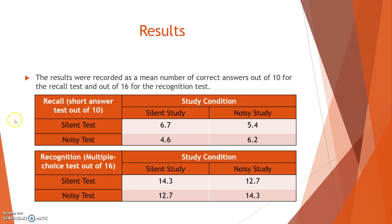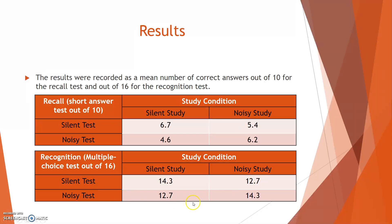For the recognition test, the silent study/silent test scored 14.3, and this was exactly the same for noisy study/noisy test at 14.3. Similarly, silent study/noisy test scored 12.7, and noisy study/silent test also scored 12.7.